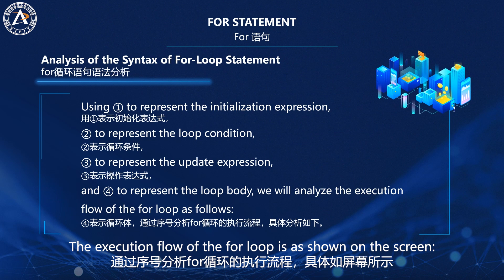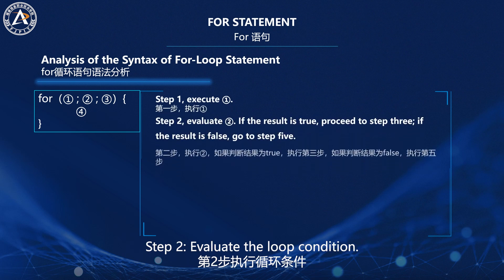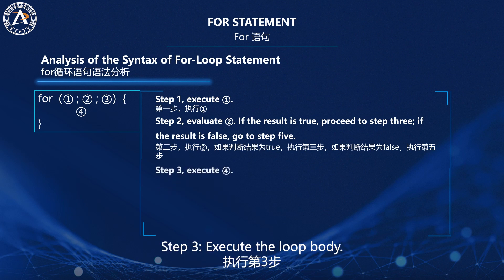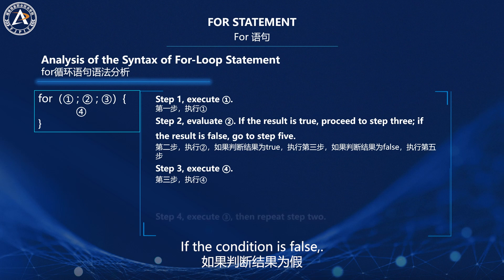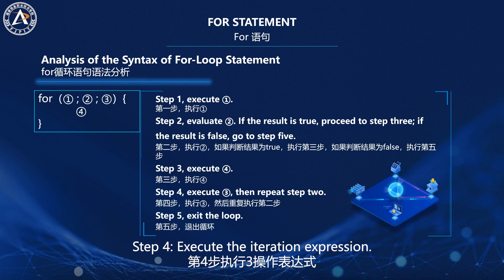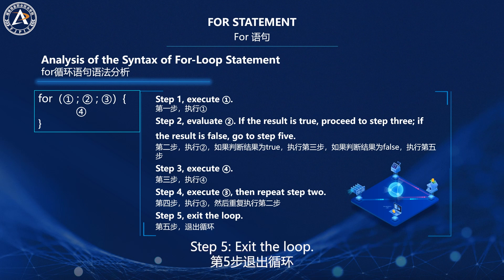The execution flow of the for loop is as shown on the screen. Step one: execute the initialization expression. Step two: evaluate the loop condition. If the condition is true, proceed to step three. If the condition is false, proceed to step five. Step three: execute the loop body. Step four: execute the iteration expression. Repeat steps two to four until the loop condition is false. Step five: exit the loop.